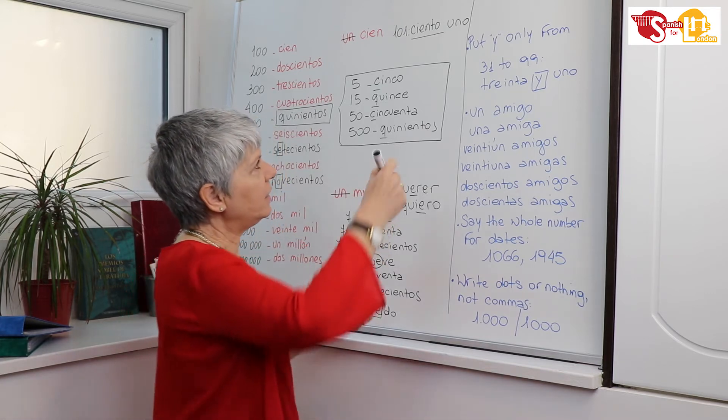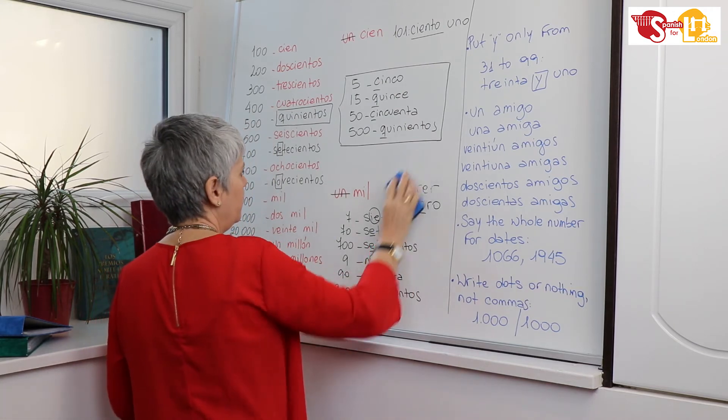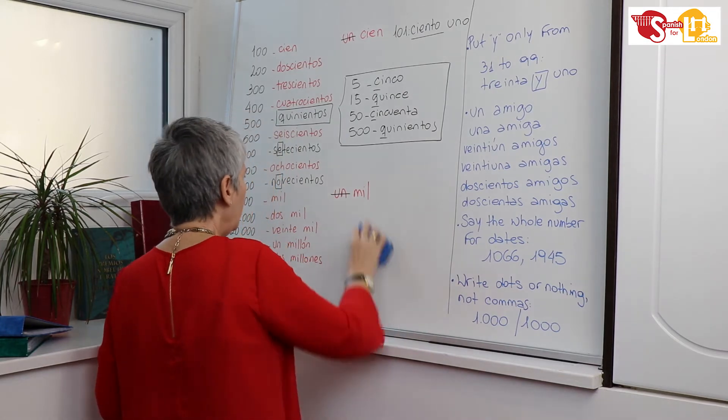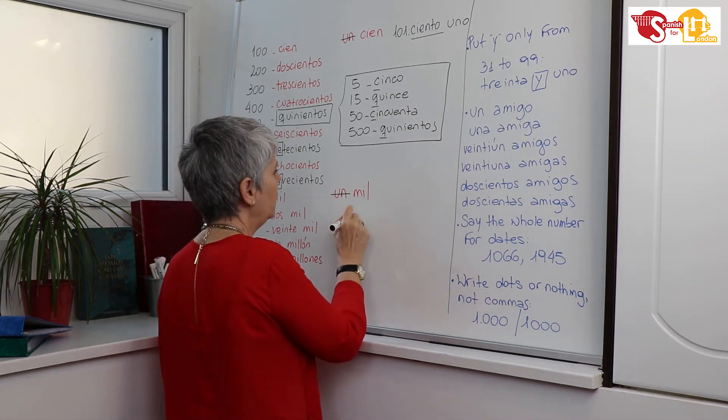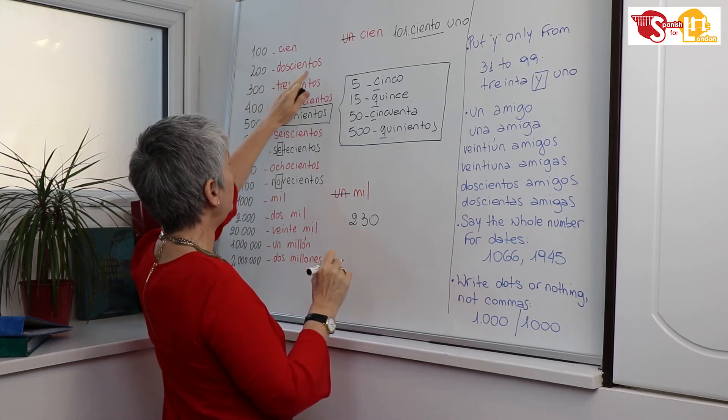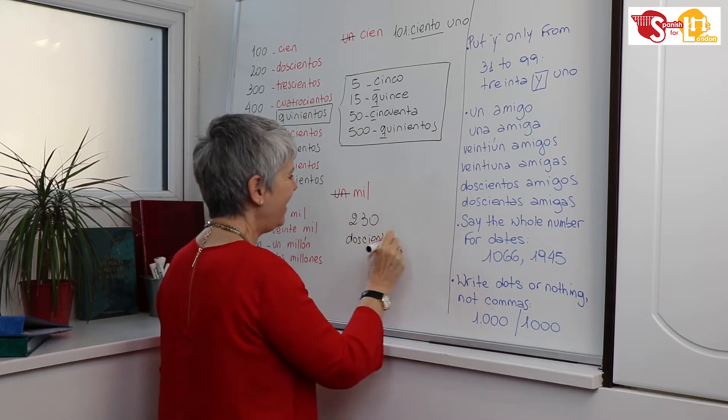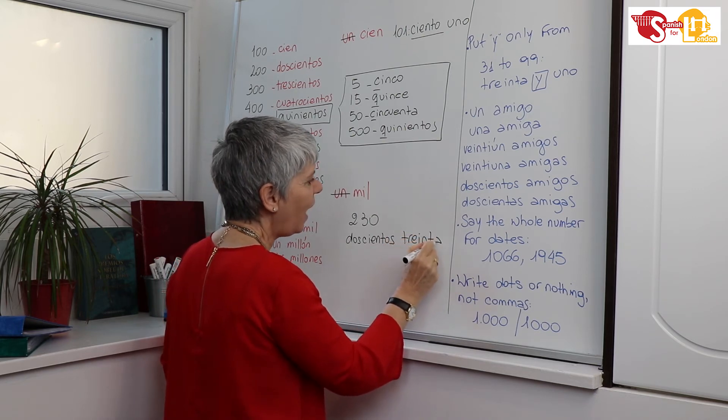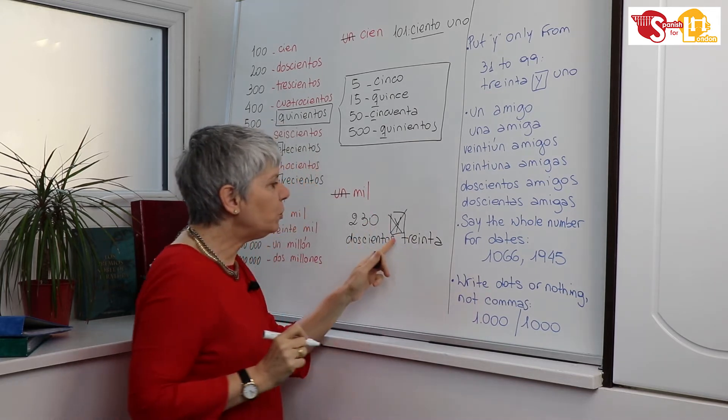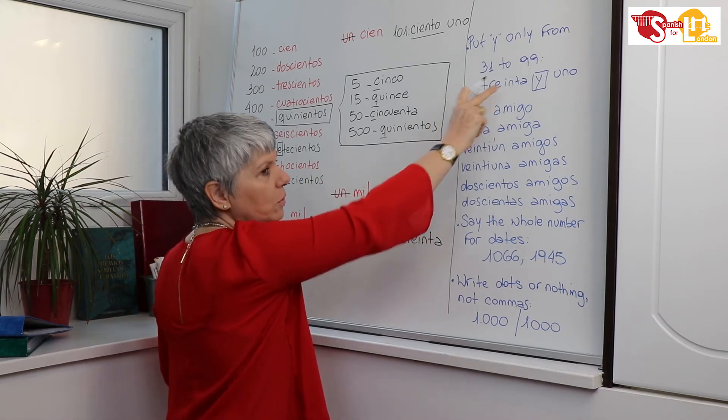Remember, don't put the Y in any other position when using numbers. So for example, imagine that you want to say two hundred and thirty. Okay, two hundred, doscientos, and then thirty, treinta. Do you see? I do not say doscientos y treinta. You don't put Y here.